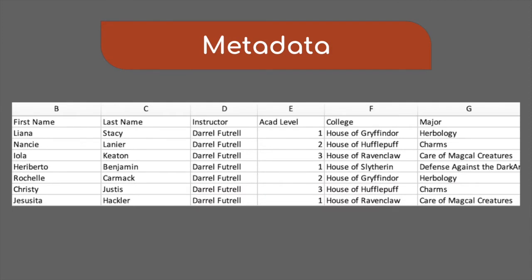Here is an example of some columns from the metadata spreadsheet that we provided as demo data. As you can see, this metadata contains information about students' first and last names, college, academic level, student major, country of origin, etc. We use a metadata spreadsheet like this one to create headers and filenames.